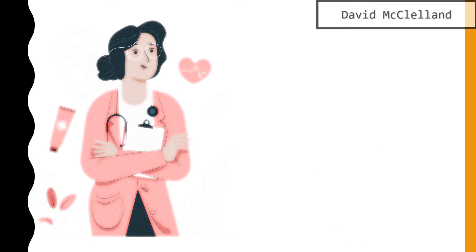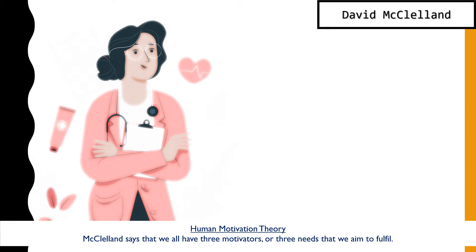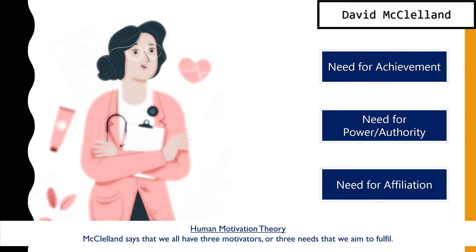Let's talk about David McClellan and his Human Motivation Theory, also known in most books as the Theory of Needs. McClellan says that we all have three motivators or three needs that we aim to fulfill. These needs are shaped by our experiences in life and the nature of our jobs, which modifies the way we are motivated.